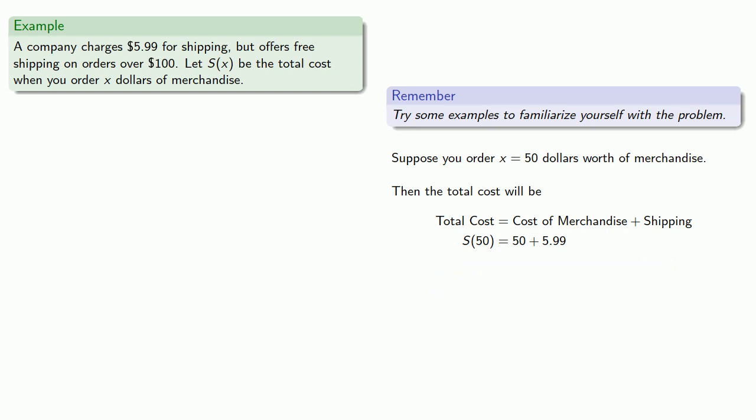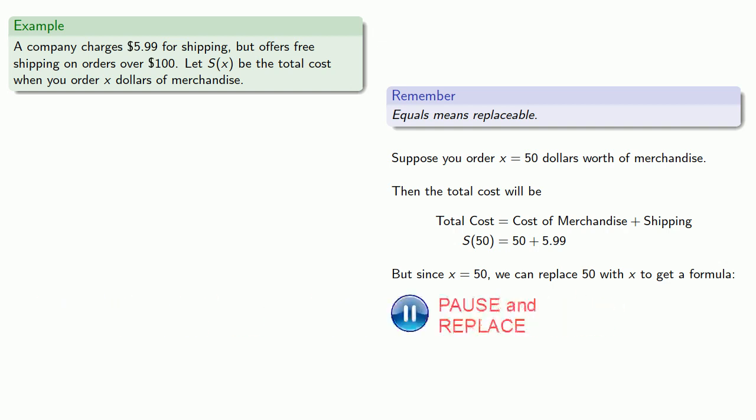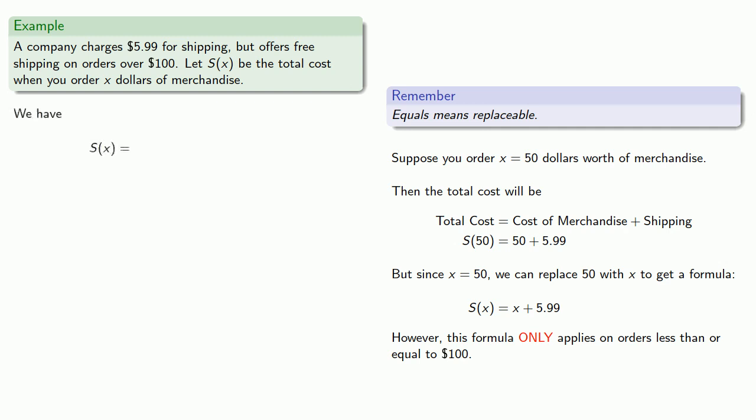Now, since we're trying to do the algebra, it helps not to do the arithmetic. So remember, equals means replaceable. Saying x equals 50 means that any place I see x, I can replace it with 50. Well, I don't see it anywhere. But also, any place I see 50, I can replace it with x. And the important thing to remember is that because there is a change when our orders hit $100, this formula only applies on orders less than or equal to $100. So when we write our function, we'll include the formula with a note that this is only good if x is less than or equal to $100.